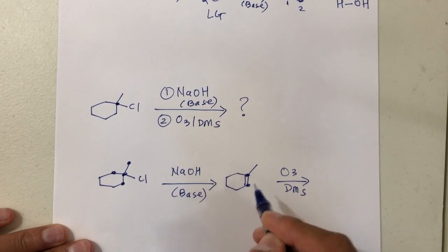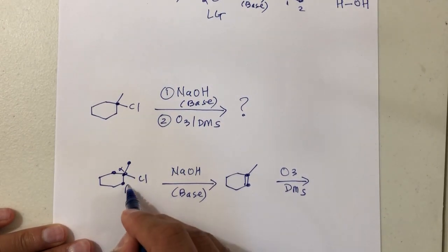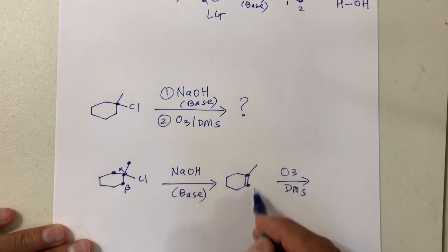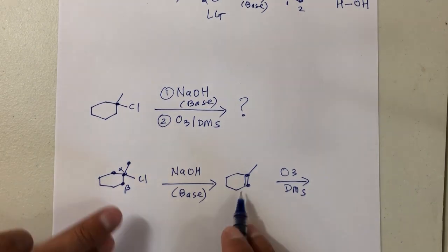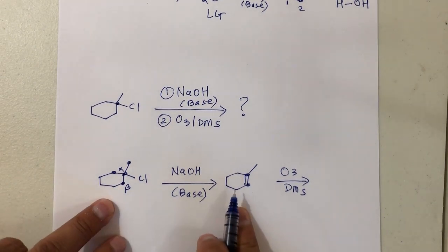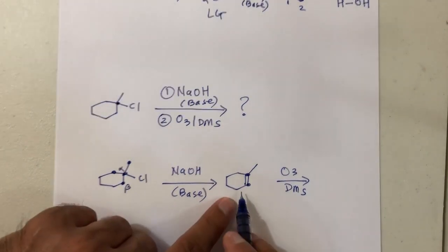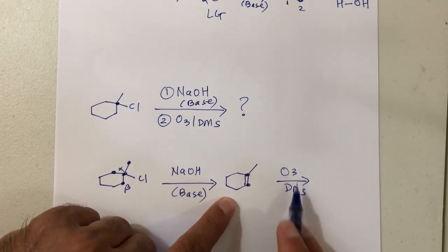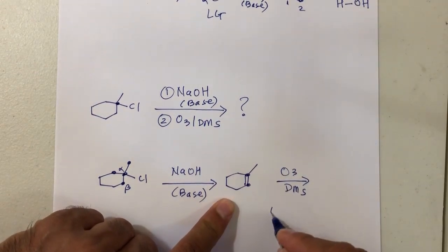So that's your alpha and that's your beta — the double bond is placed there. That's your major product from step one. Then that product will react with number two, which is O3 and DMS — that is ozonolysis.